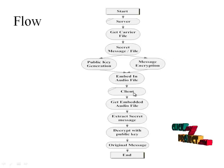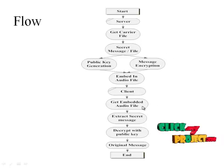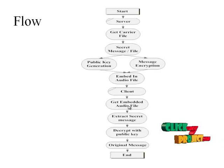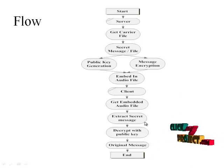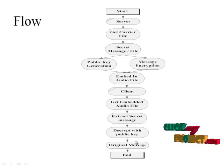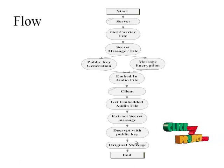The embedded audio file will be generated as an output file with the secret message. That output file will be forwarded to the client. The client will receive the embedded audio file and key file, extract the secret message, and decrypt it using the public key generated by the server. Finally, the receiver or client will get the original message.